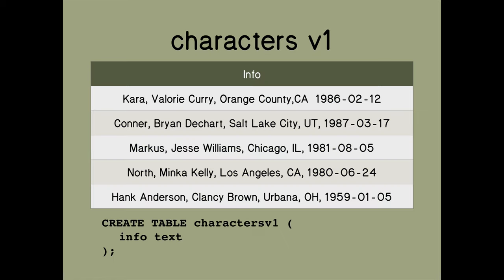As you can imagine, there are many different ways of encoding this information into a database table. One way is we could just have a database table of one column called Info. Here I've created a table with just Info, and all the information is just stashed in that one column — just one huge long text string.